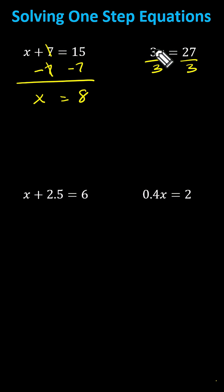Simplifying on the left, three divided by three is one, and one times x is x. We have x equals 27 divided by three, which is nine.